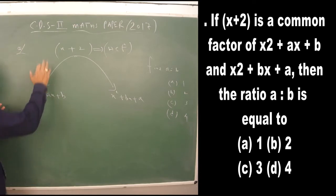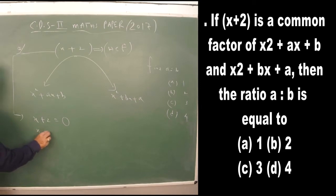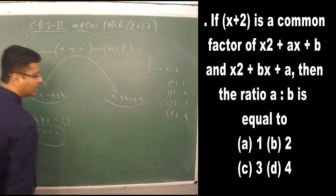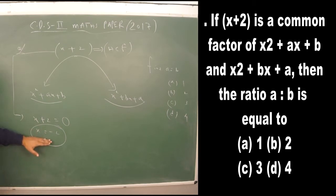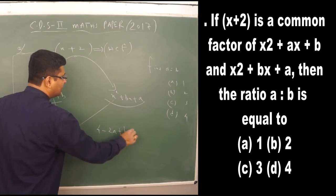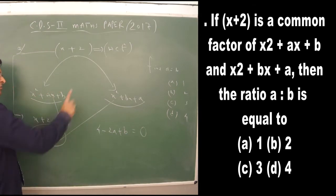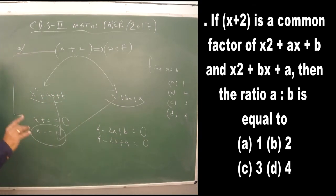When something is a factor of two polynomials, we equate that factor to zero. Setting x + 2 = 0 gives x = -2. Substituting x = -2 into the first polynomial: 4 - 2a + b = 0. Substituting into the second polynomial: 4 - 2b + a = 0.